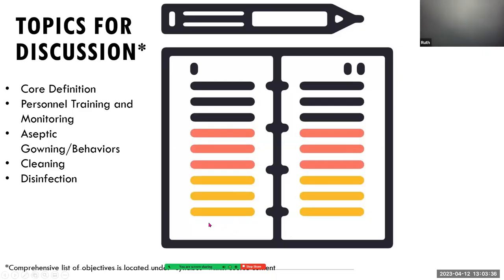Today we're going to go over some core definitions — a few we covered last session and a few that are new. Then we'll review personnel training and monitoring, move into discussing our aseptic gowning and behaviors, as well as discuss cleaning and disinfection activities in our aseptic processing area. For a complete list of the objectives, you can locate them under the syllabus section within course content.